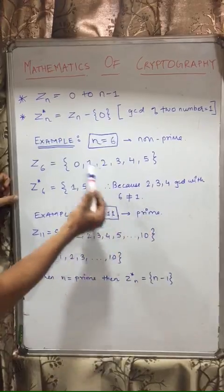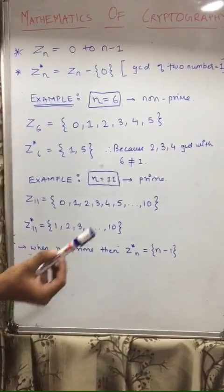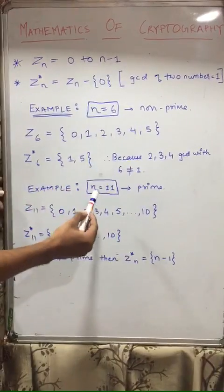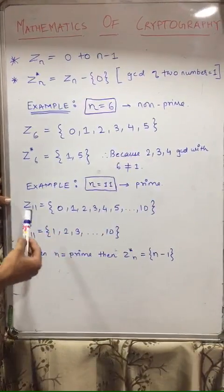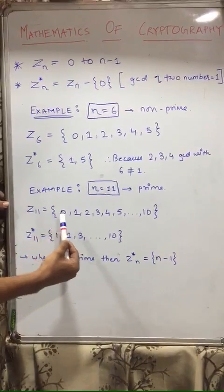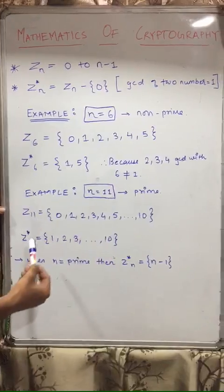Okay, now another example. This was a non-prime, now it will be prime. So when n is equal to 11, so it is a prime number, so that Z11 will be equal to 0, 1, 2, 3, 4, 5, till 10.